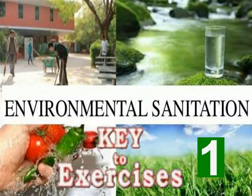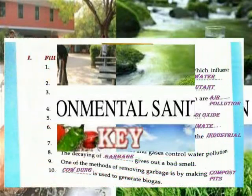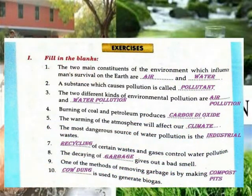Standard Science Lesson 4: Environmental Sanitation. The two main constants of the environment which influence life's survival are air and water. The substance that causes pollution is called a pollutant. The two main types of environmental pollution are air pollution and water pollution. Burning of coal and petroleum produces carbon dioxide. The warming of the atmosphere will affect our climate. The most dangerous source of water pollution is industrial waste.